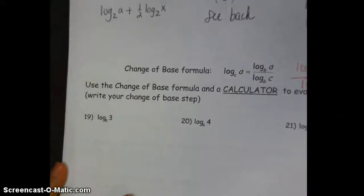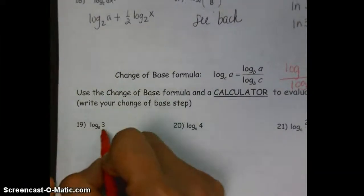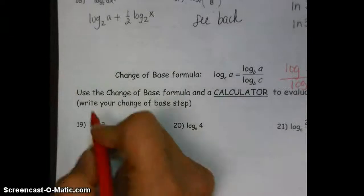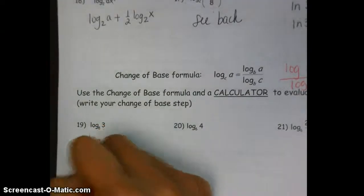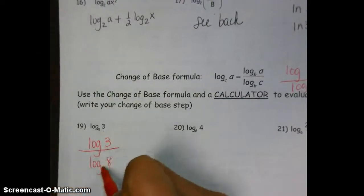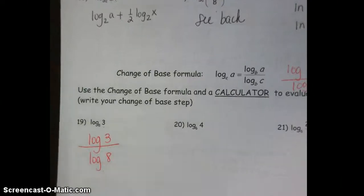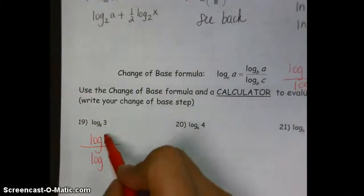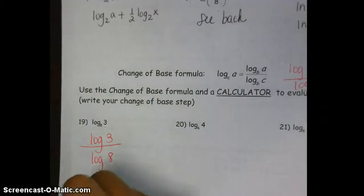All right, so what does this look like? So if I ask you to evaluate this and you don't have a calculator, you would use your change of base formula and say this is equivalent to log 3 over log 8. Each one of these are the common base of base 10. If I ask you to evaluate it in the calculator, then you simply would just do log 3 enter divided by log 8 enter and you would get a decimal approximation of 0.528.